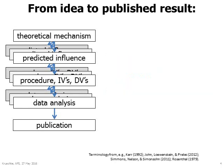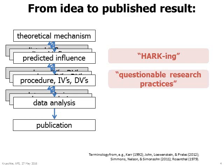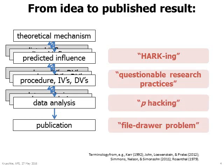At each fork in the path, the researcher selects one, perhaps after the fact. These various types of selection have been given a variety of names, such as HARKing — that is, hypothesizing after the results are known — questionable research practices, p-hacking, and the file drawer problem. The problem with this selectivity is that it selects spurious, accidental findings that may not be reliable.